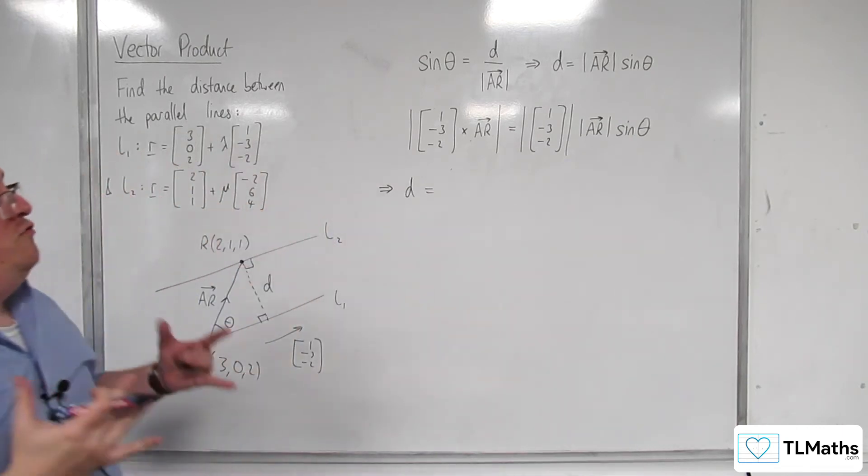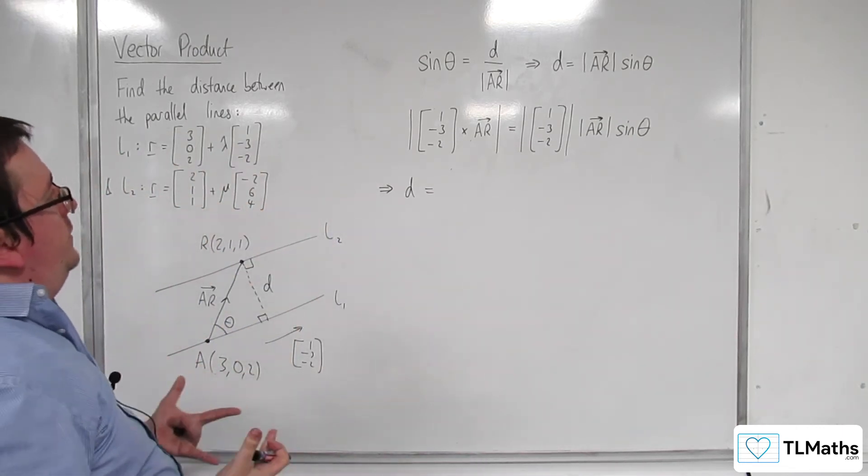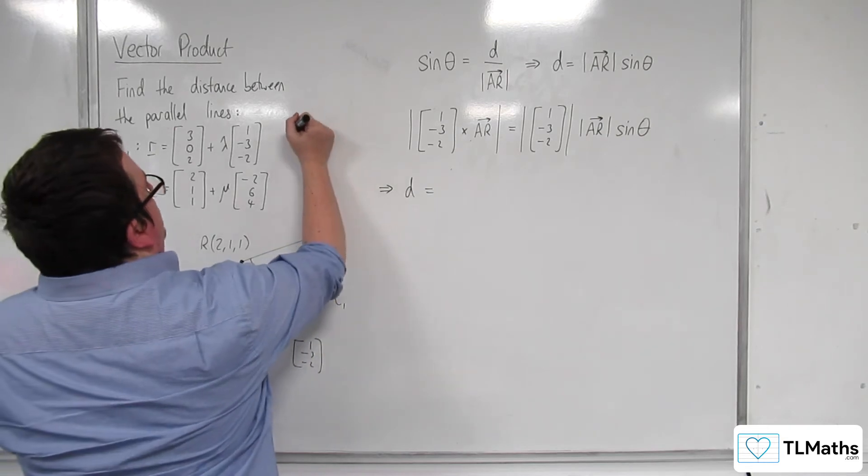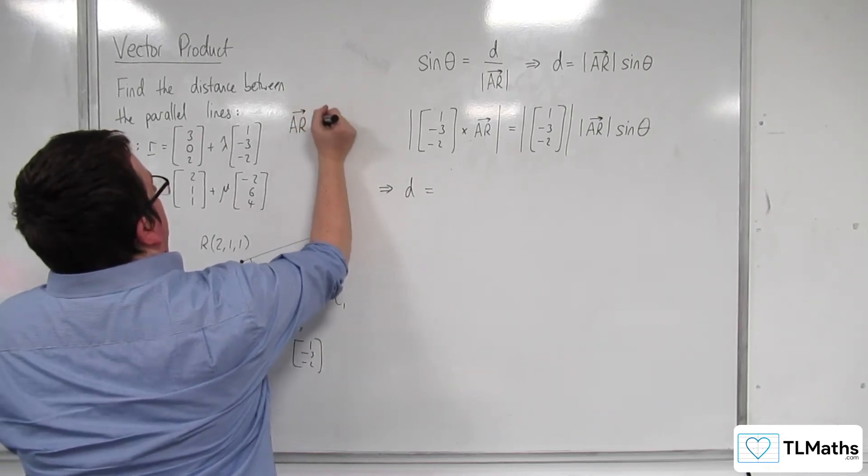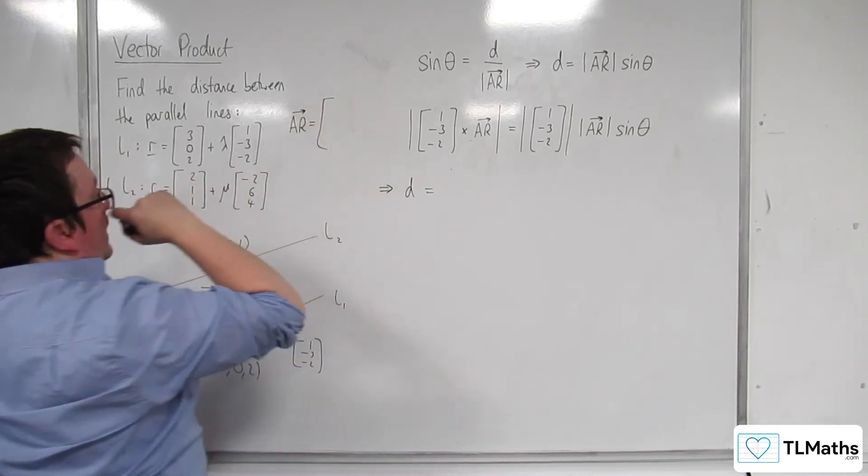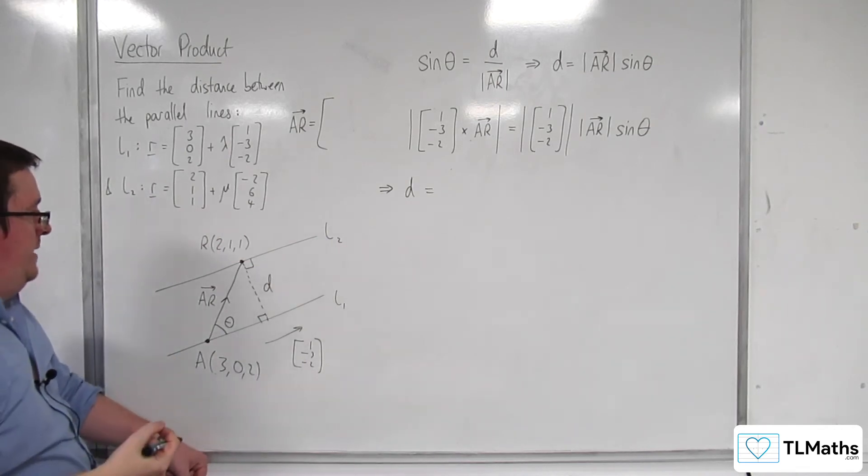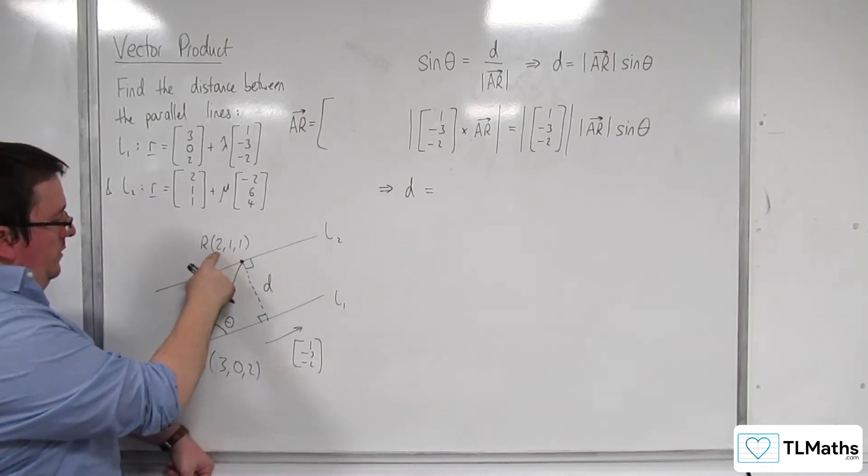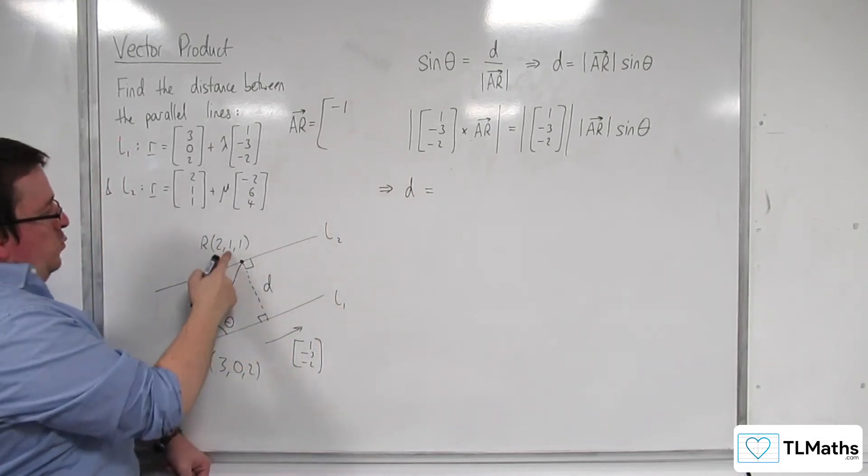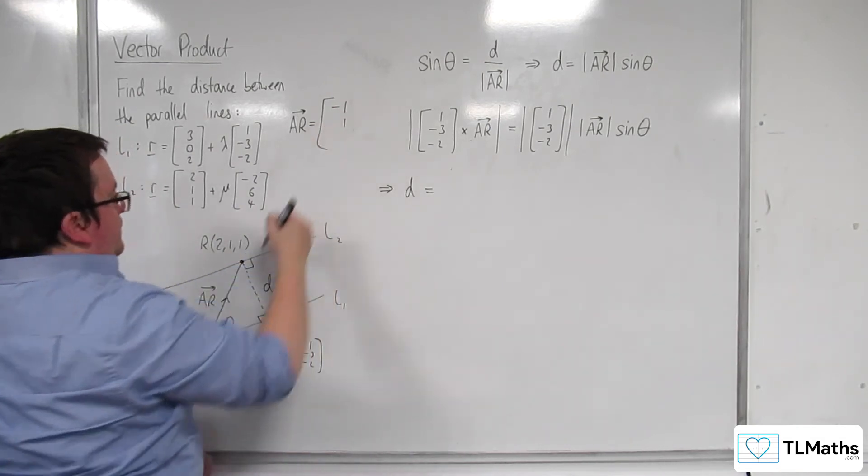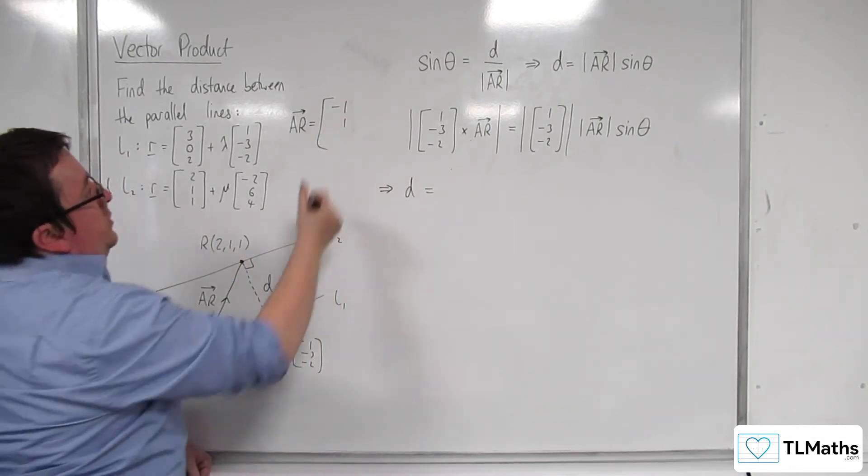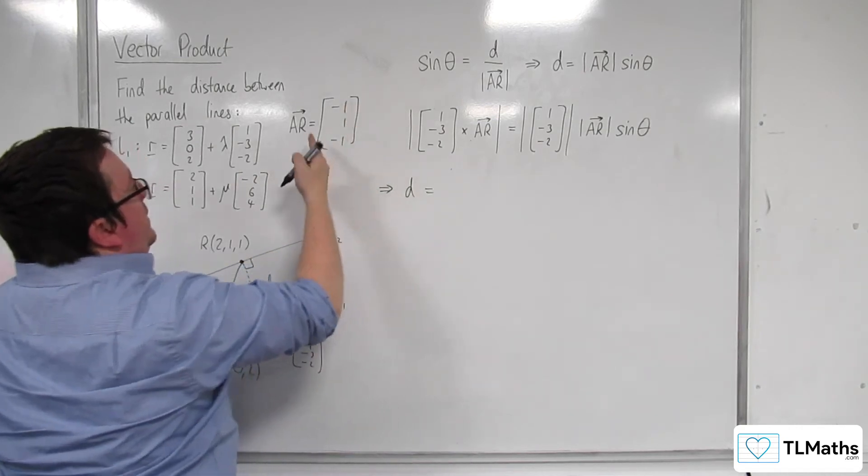So what I really want is to work out what AR is. So up here I'll write AR is equal to OR minus OA. So 2, take away 3, so minus 1. 1, take away 0, is 1. 1, take away 2, is minus 1. So there's AR.